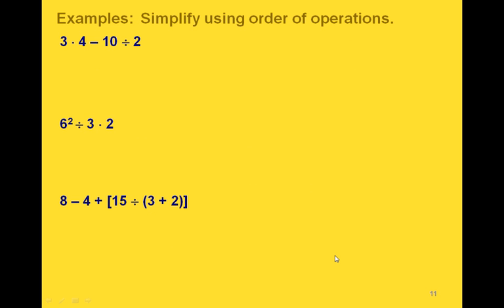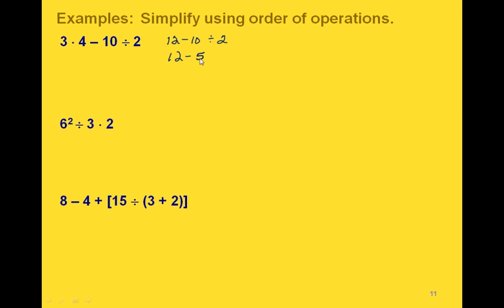Here are more examples. In the first problem, we have a multiplication and a division. Going left to right, we do three times four first to get 12, then ten divided by two to get 5. Now we have 12 minus 5, and our subtraction gives us 7.